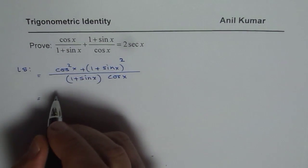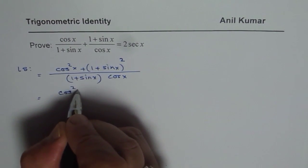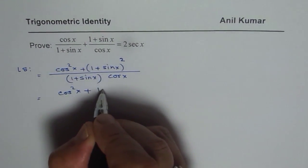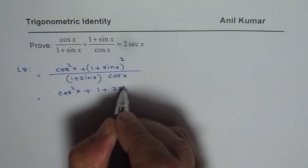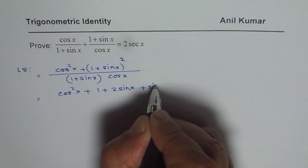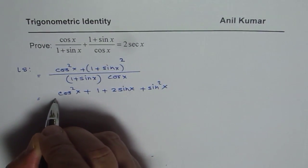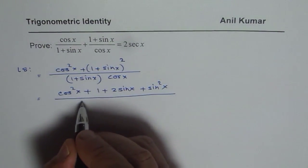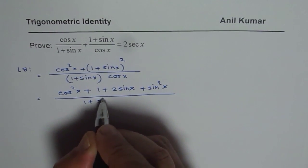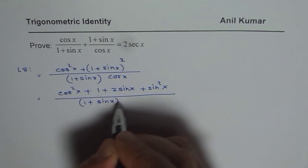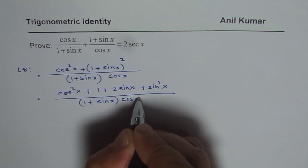Let us expand. So we have cos squared x plus 1 plus 2 sin x plus sin squared x over 1 plus sin x times cos x. Do not expand the denominator.